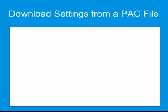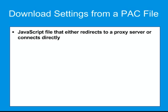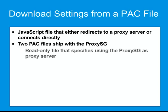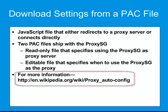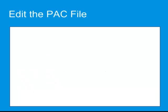Instead of configuring browsers with the proxy server settings, you can specify that browsers download explicit proxy settings from a PAC file. A PAC file is a JavaScript file that tells the browser to either redirect to a proxy server or connect directly to the URL requested. Two PAC files ship with the ProxySG: a read-only default PAC file, which specifies to use the ProxySG as the proxy server, and an editable PAC file which specifies when to use the appliance as the proxy, which ports to use for specific types of requests, and when to connect directly to the origin content server. The PAC file is written in JavaScript, so you should be familiar with JavaScript functions before attempting to edit the file.